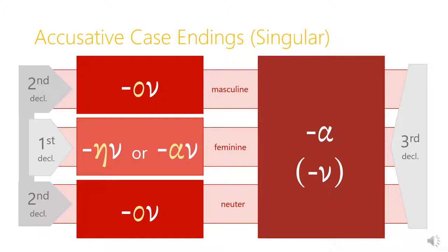If we add on to those endings the connecting vowel, then in the second declension — in the masculine and the neuter — the omicron connecting vowel comes in front of the nu, so we get an -on ending. Where sometimes masculine and neuter endings are different in the second declension, in the accusative they usually look the same: -on. The first declension uses either the eta or the alpha connecting vowel to yield an ending that looks like either -ain or -an. In the third declension there is no connecting vowel, and so we just have the alpha tacked onto the end, or in a couple of third declension types, the nu.